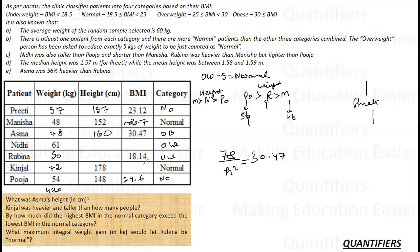Similarly for Rubina, 50 upon x square is 18.14, so x square is 50 upon 18.14, under root something 165, 166, somewhere around this.